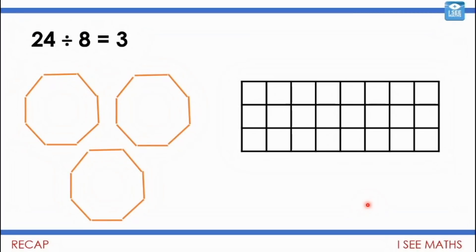A few weeks ago when we were looking at division, we used lots of visual representations to break it down. We had a look at questions like 24 divided by 8 equals 3. We saw we could use matchsticks to show that — how many 8s in 24? There's 3. Or we could use an area model: a strip of 8. How many strips of 8 in 24?